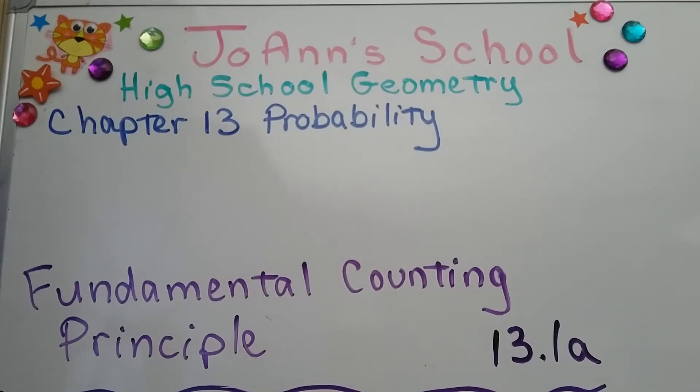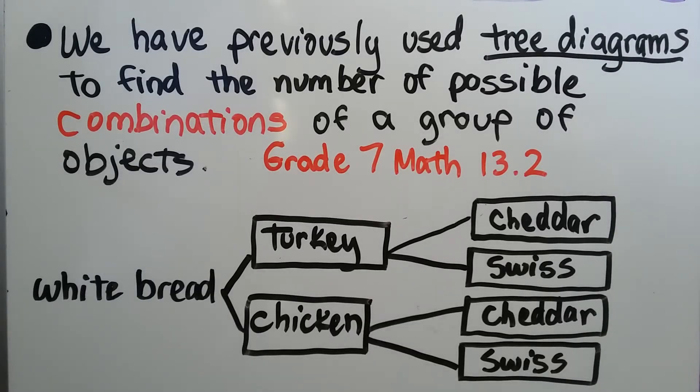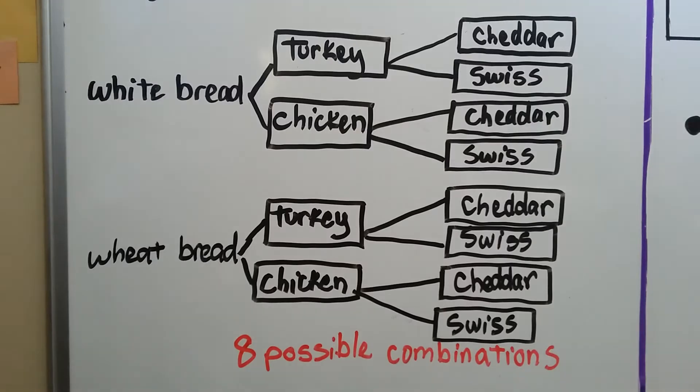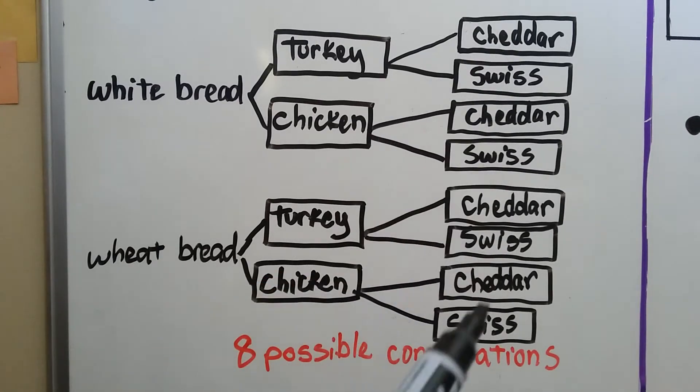Fundamental Counting Principle, lesson 13.1a. In middle school, we previously used tree diagrams to find the number of possible combinations of a group of objects. We did it in grade 7 math, 13.2. For here, we have white bread, a choice of turkey or chicken, and a choice of four different types of cheese. If we also have a choice of wheat bread, that gives us eight possible combinations for sandwiches. We can see from the tree diagram, we have eight here.